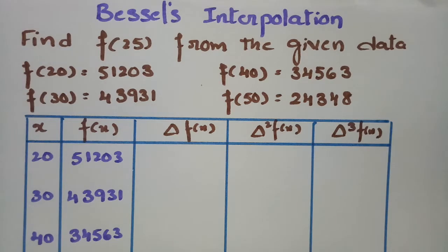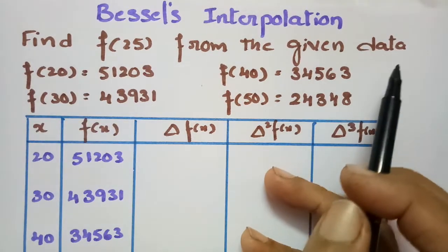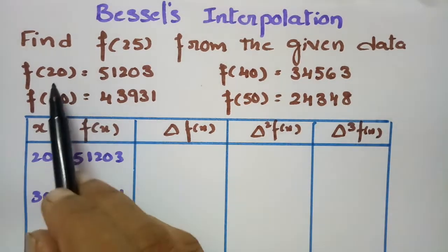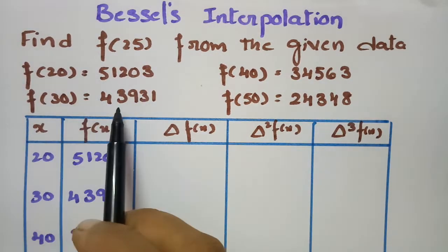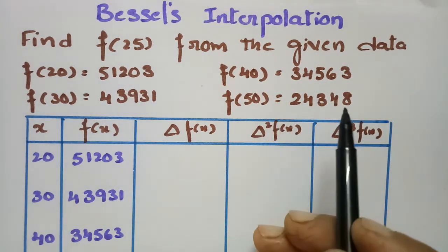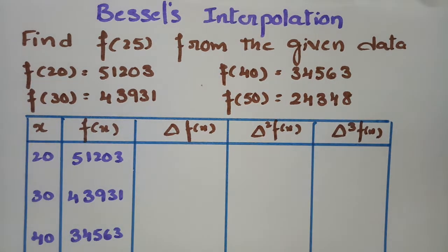In today's video, I am going to solve the problem using Bessel's Interpolation Formula. We have to find f(25) from the given data. Given values are f(20), f(30), f(40), and f(50). First of all, we have to frame the forward difference table.